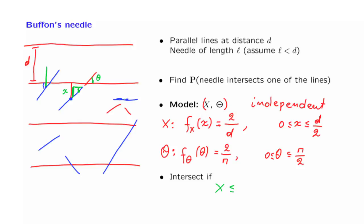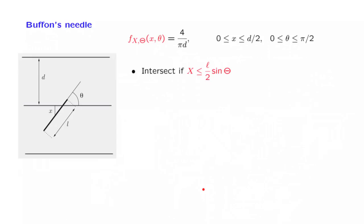Now, how big is this vertical extent? Let's use some trigonometry here. This angle here is theta, so this angle here is also theta. Here we have a right triangle, and the hypotenuse of this triangle is L over 2. This angle is theta, therefore this vertical segment is equal to L over 2 times sine theta. So this is the geometrical condition that describes the event that the needle intersects the nearest line, and all we need to do now is to calculate the probability of this event.